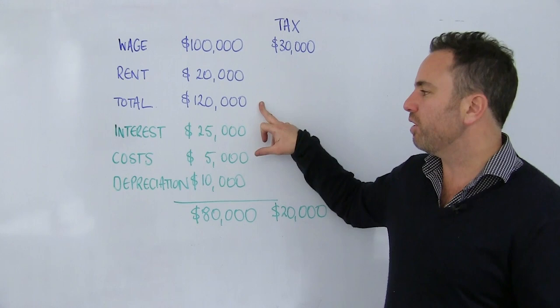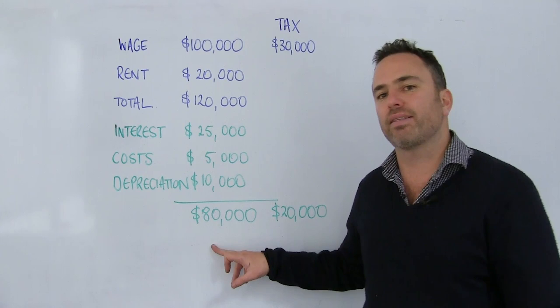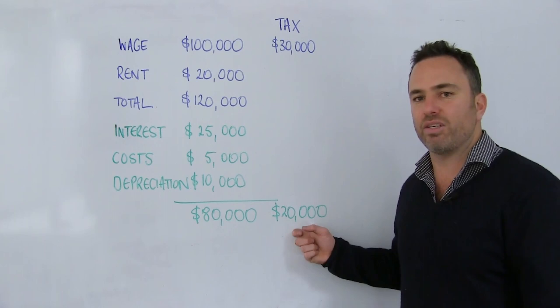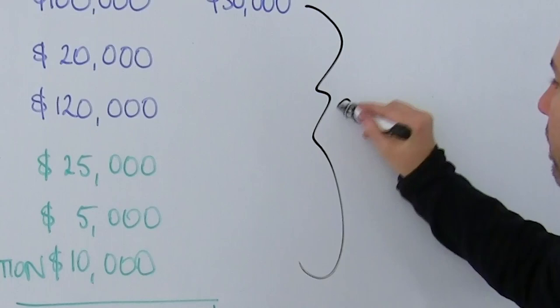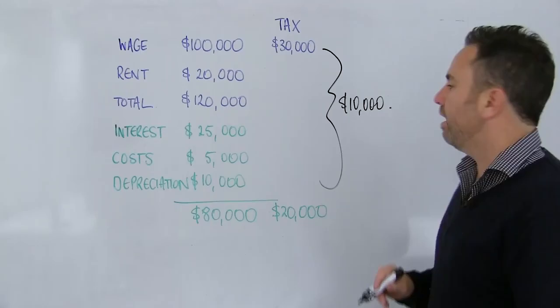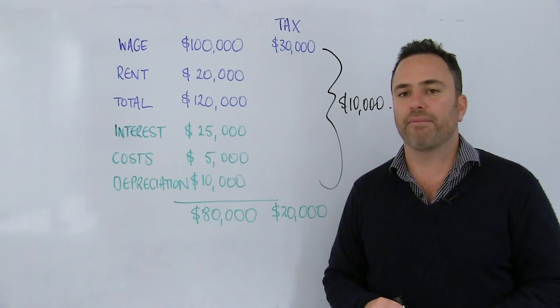So when I take $120,000, which is my total income, and deduct all of these expenses, I'm back down to $80,000. Now on $80,000, the tax that I should have paid is only $20,000, yet I would have paid $30,000. So this difference here is my negative gearing benefit of $10,000.